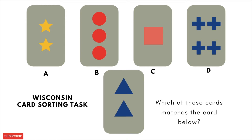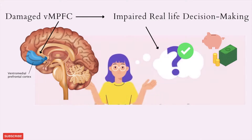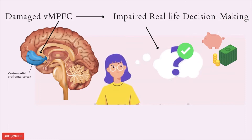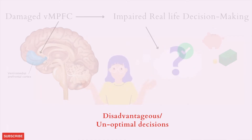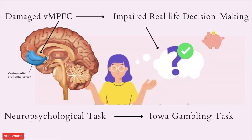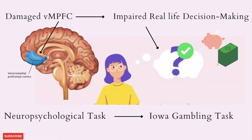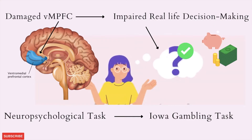Previous researchers reported that while patients with damage to their VMPFC had intact intellect and problem solving abilities — as evidenced by their appropriate performance in tasks such as the Wisconsin Card Sorting Task measuring intelligence — these patients displayed several impairments in their real-life decision making processes, wherein they consistently made disadvantageous decisions and suboptimal choice selections. To empirically test this, Bechara and colleagues developed the neuropsychological task of the IGT, as no such paradigm existed to test such patients.